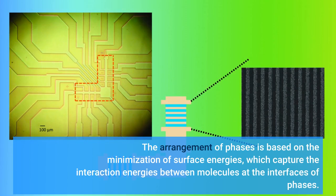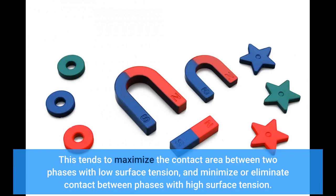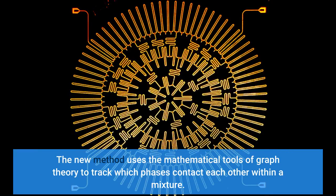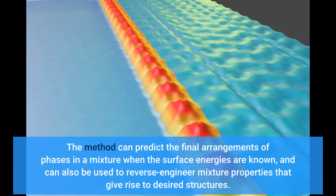The arrangement of phases is based on the minimization of surface energies, which capture the interaction energies between molecules at the interfaces of phases. This tends to maximize the contact area between two phases with low surface tension, and minimize or eliminate contact between phases with high surface tension. The new method uses the mathematical tools of graph theory to track which phases contact each other within a mixture. The method can predict the final arrangements of phases when surface energies are known, and can also be used to reverse engineer mixture properties that give rise to desired structures.